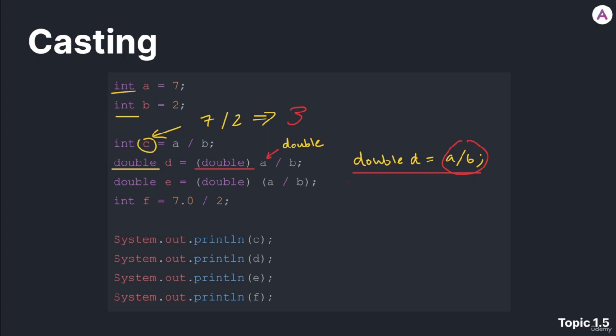So what we can do to give us the 3.5 is to cast, to type cast, change the type of this a, which was originally an integer. And we can basically typecast it and change its value just temporarily, not permanently, temporarily, so that we may get the answer we desire.